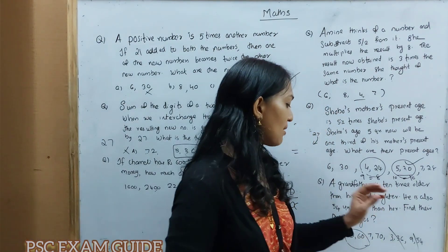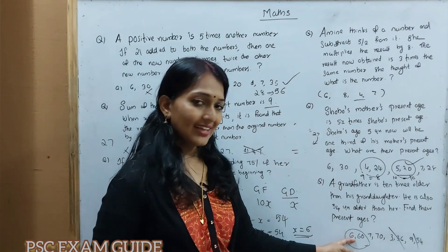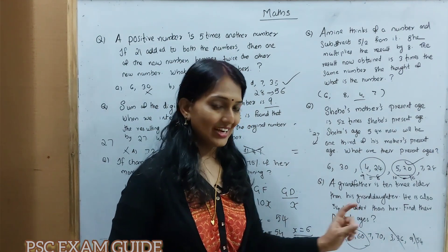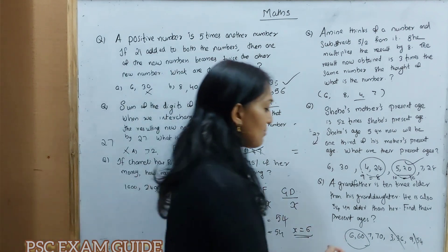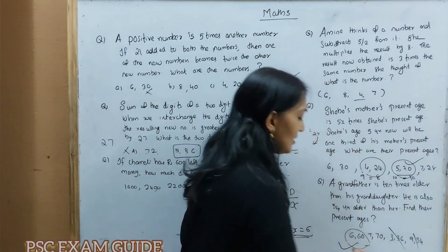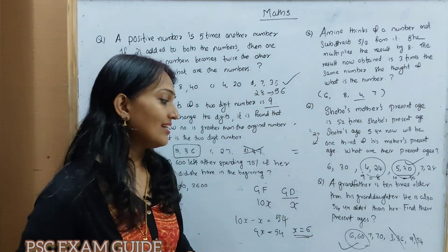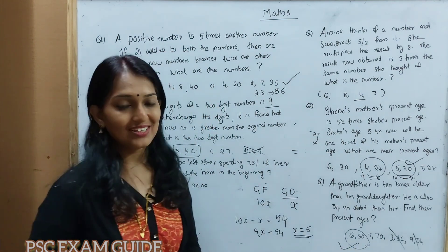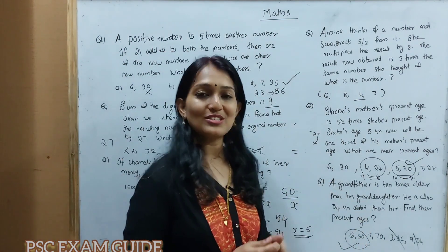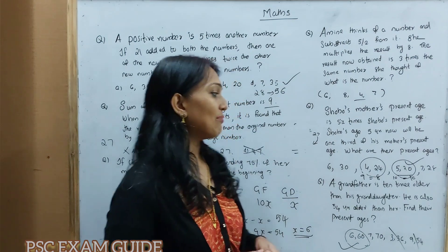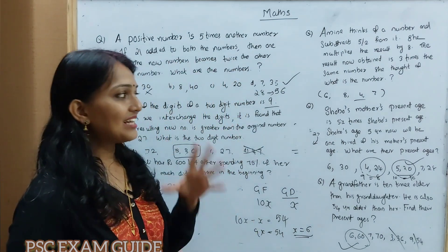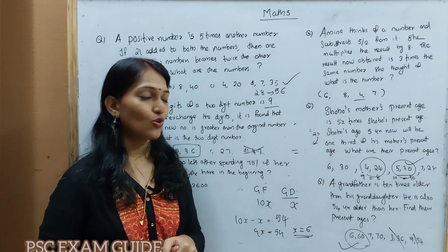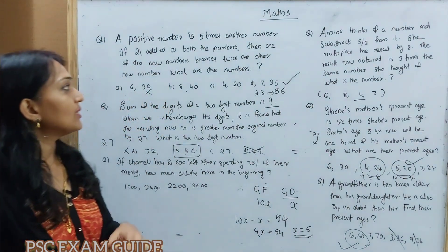The two different conditions are: grandfather's age minus granddaughter's age equals 54. Since grandfather is 10 times older, we get 9x equals 54. Then 54 is 60 — so x equals 6. We have two different options to solve using a number system.